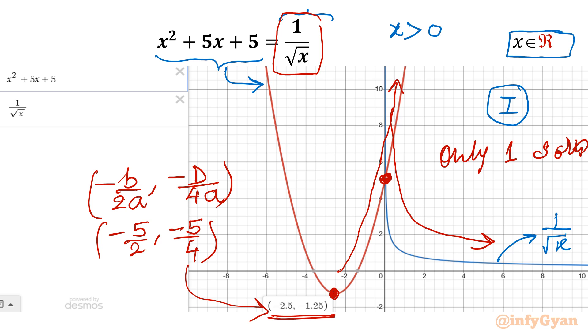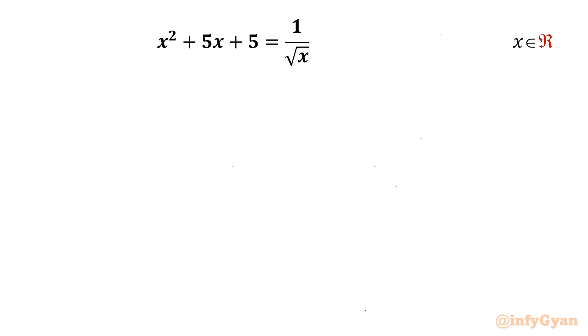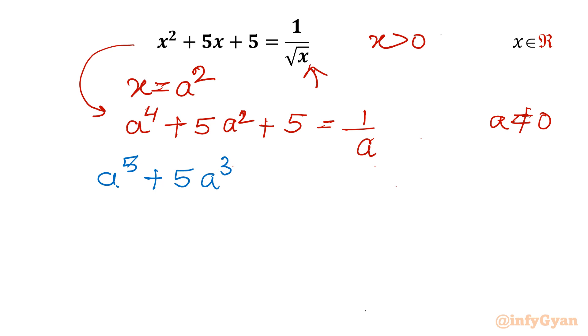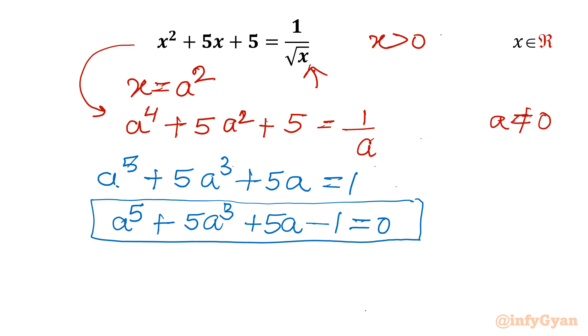So let's find out that individual or single solution algebraically. I will use substitution straight away. So I will use x = a² as we have a square root involved. So let us put this value over there. So it will become x² will be a⁴ + 5x, so 5a² + 5 = 1/a. A is nonzero, a cannot be equal to 0. Now I will cross multiply as a is nonzero. So I will be writing a⁵ + 5a³ + 5a = 1. So this equation is a⁵ + 5a³ + 5a - 1 = 0, one quintic equation.